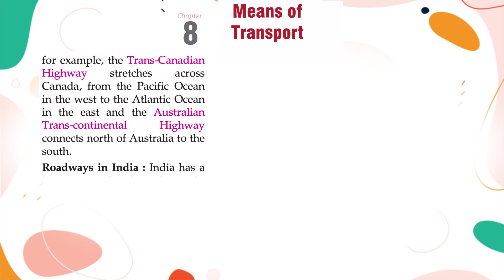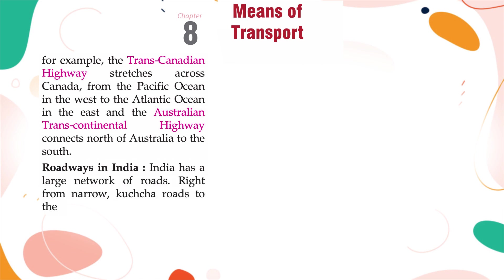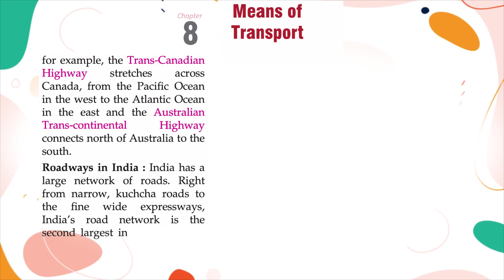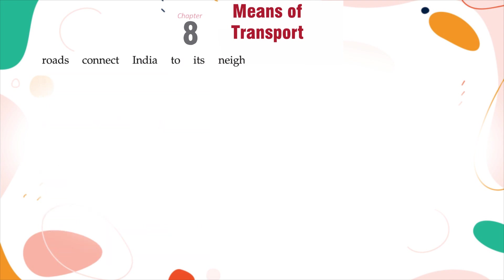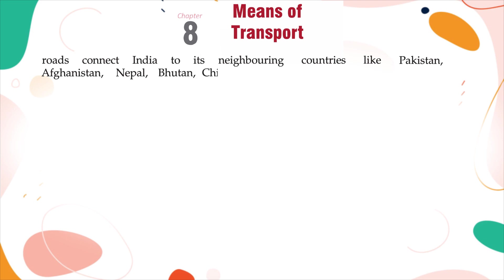Roadways in India: India has a large network of roads, right from narrow kachar roads to fine, wide expressways. India's road network is the second largest in the world. All towns and cities in India are connected by roads. Some of our roads connect India to its neighboring countries like Pakistan, Afghanistan, Nepal, Bhutan, China, and Bangladesh.